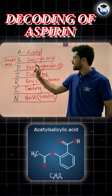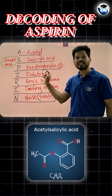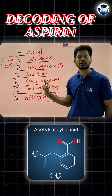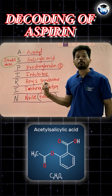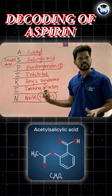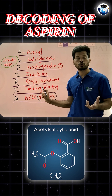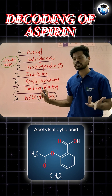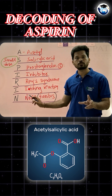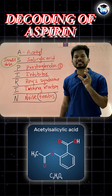Let's decode aspirin by its name as a mnemonic. A stands for acetyl; S for salicylic acid; P for prostaglandin synthesis inhibitor; R — it causes Reye's syndrome, especially in children interlinked with hepatic viral infection; I — it causes itching, as aspirin may cause an allergic reaction; N — aspirin may produce side effects such as asthma and ulcers.